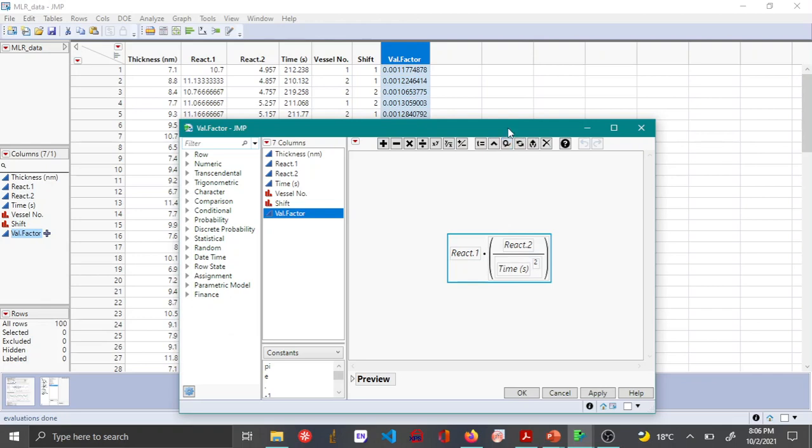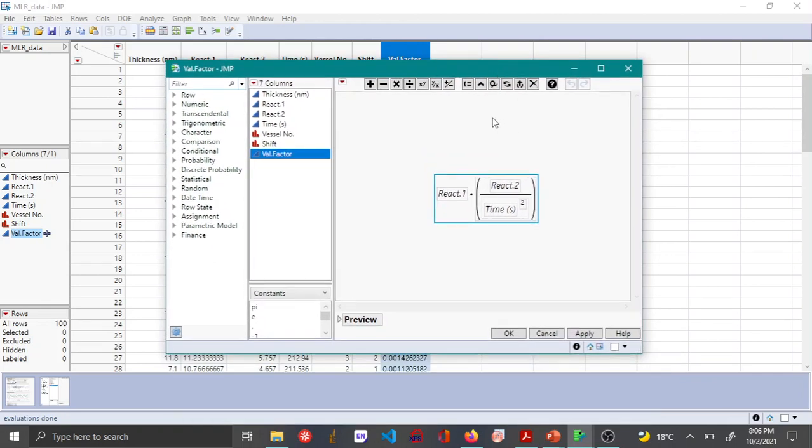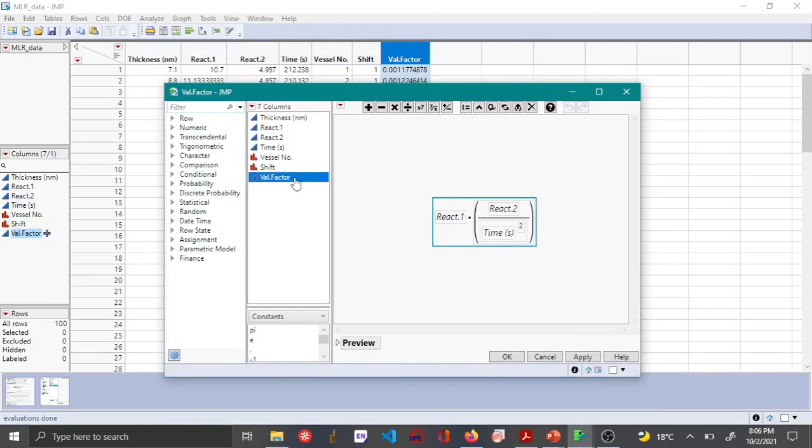If you see here, this val factor variable is actually a function of other variables in this data set. It's product of react 1 and react 2 divided by time square. So you can see that this variable is dependent on other three variables in this data set, so this results in inflating the coefficients that are estimated.